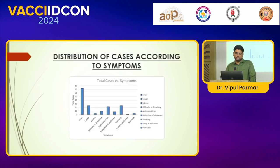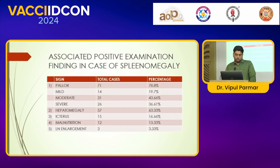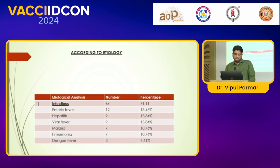Distribution of cases according to symptoms: the most common symptoms are fever, cough, edema, and difficulty in breathing. Associated positive examination findings in cases of splenomegaly include pallor, hepatomegaly, icterus, malnutrition, and lymph node enlargement.